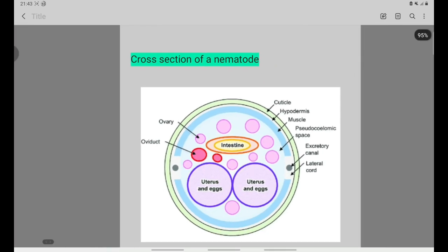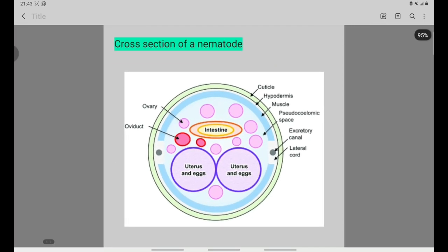This is the cross-section of the lumbricoides showing the cuticles, the hypodermis, the muscles, the pseudocoelomic spaces, and the organs.